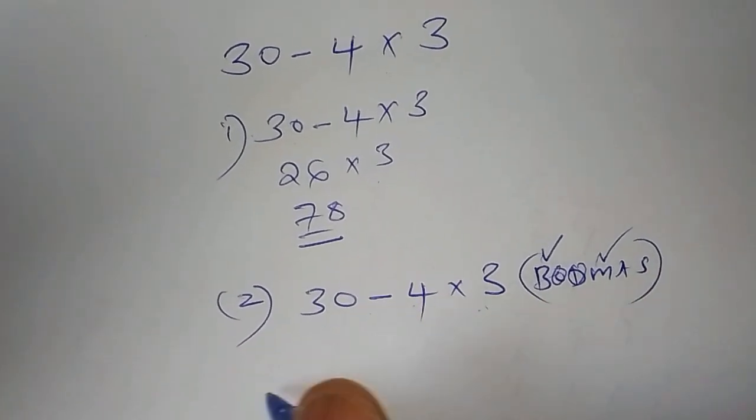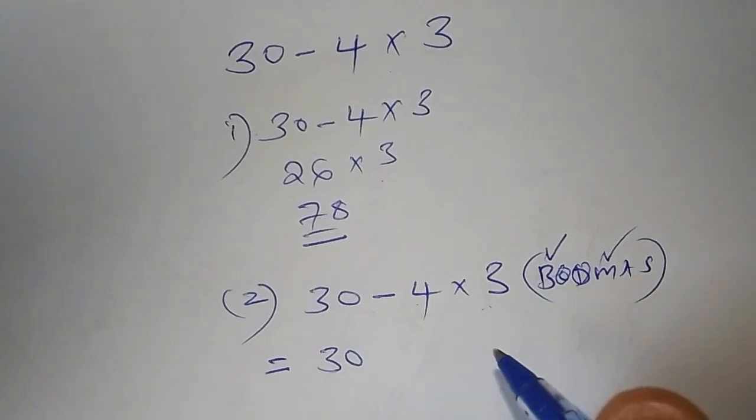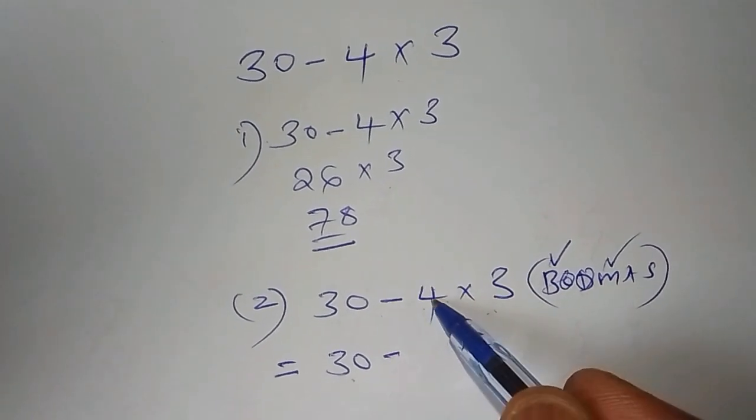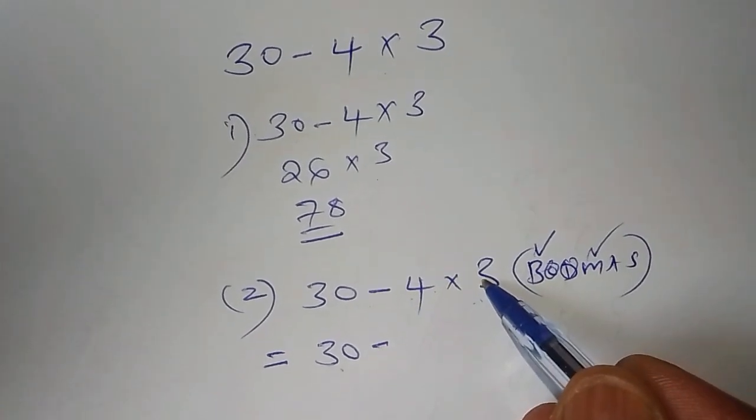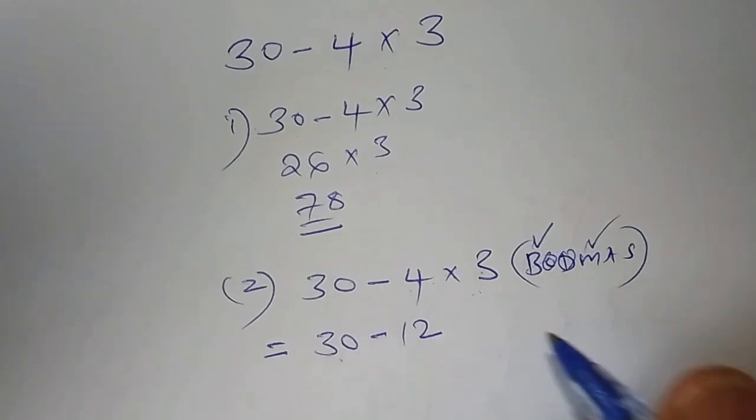So you are saying that this is equals to, then you pick 30. Then after picking 30, you say minus, then you work out this one first. 4 multiplied by 3. When you multiply 4 by 3, the answer is 12.